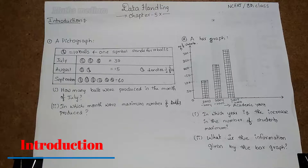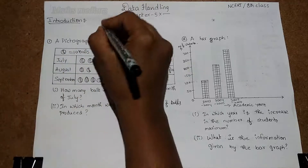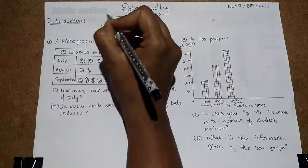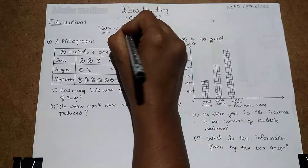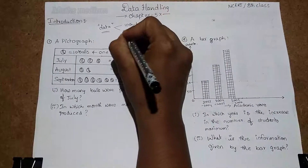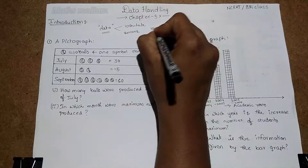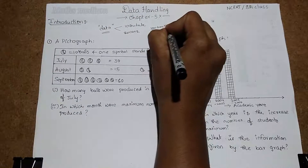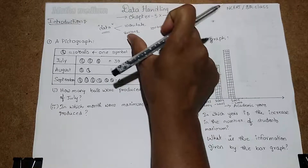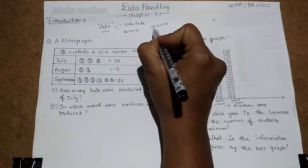The introduction is nothing but a recap of the previous classes — that is, how we are collecting data. First of all, what is meant by data? In our daily life we can see many examples: 10 students in a class, 20 cars in a showroom, or 100 books in a book stall. These numbers that represent information are called data.